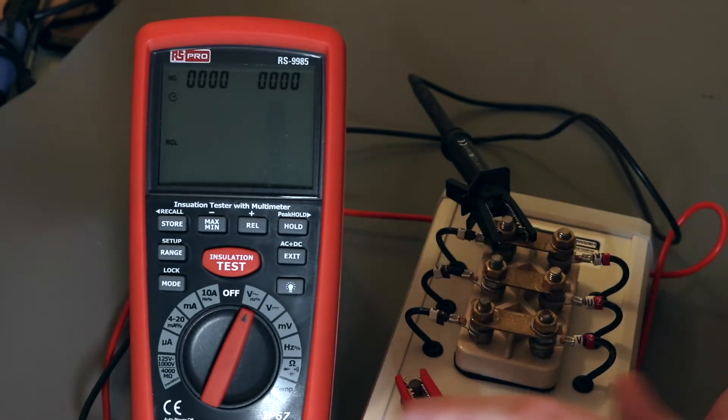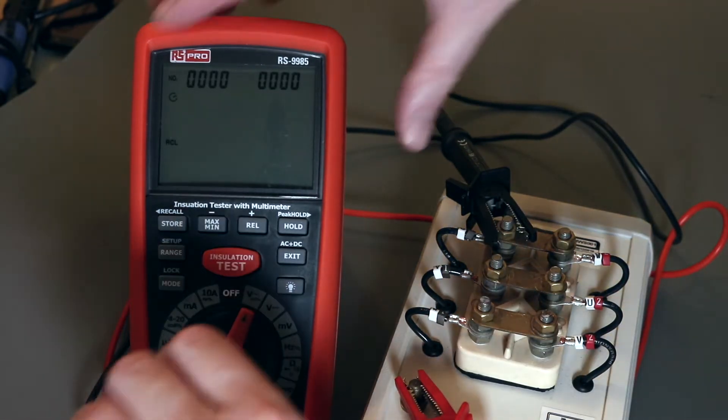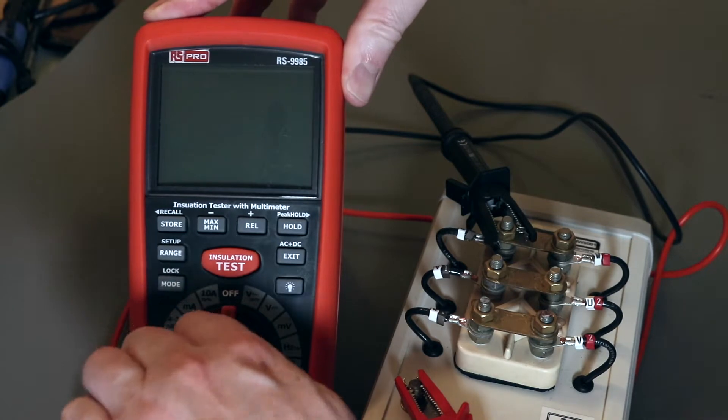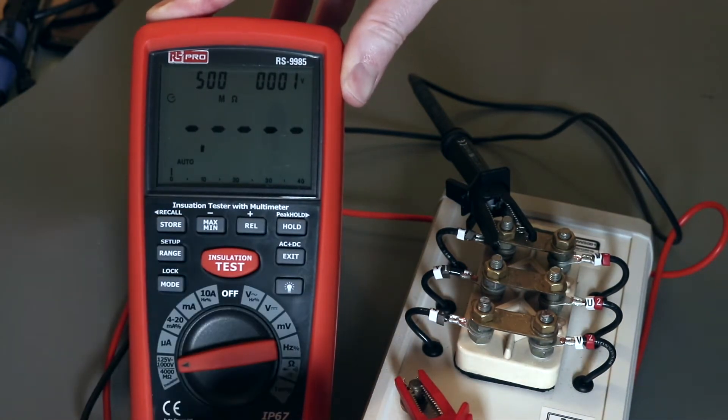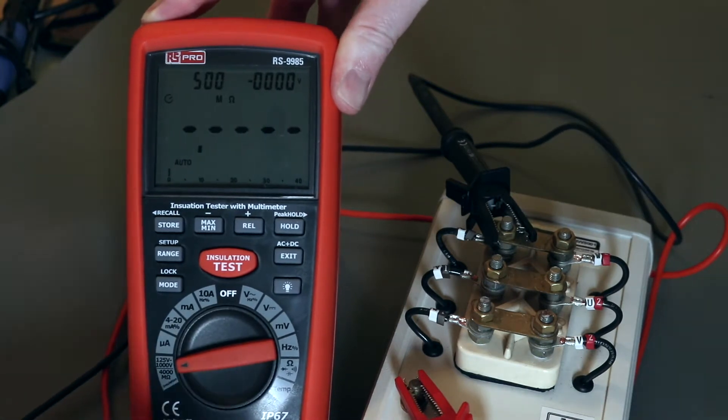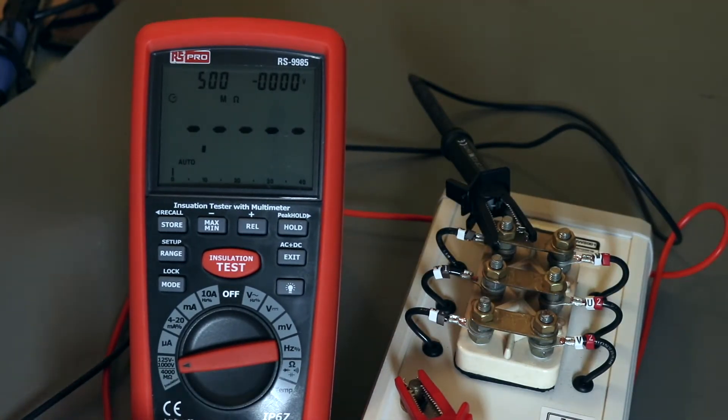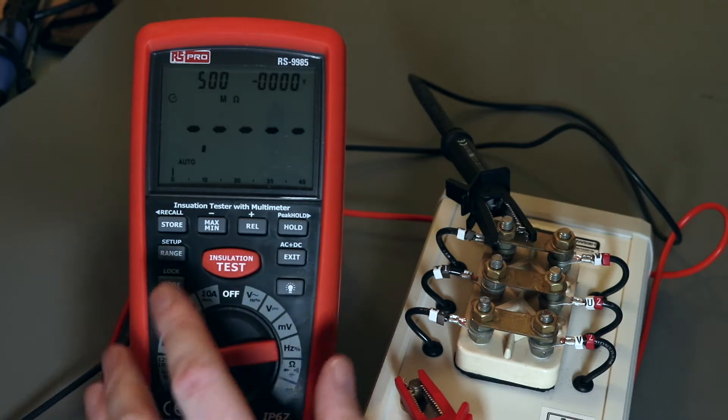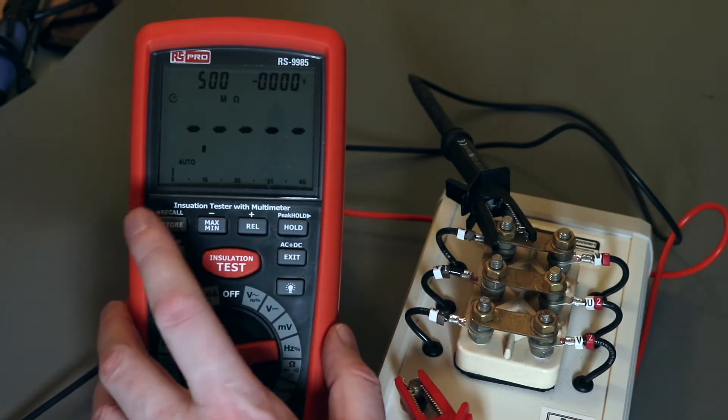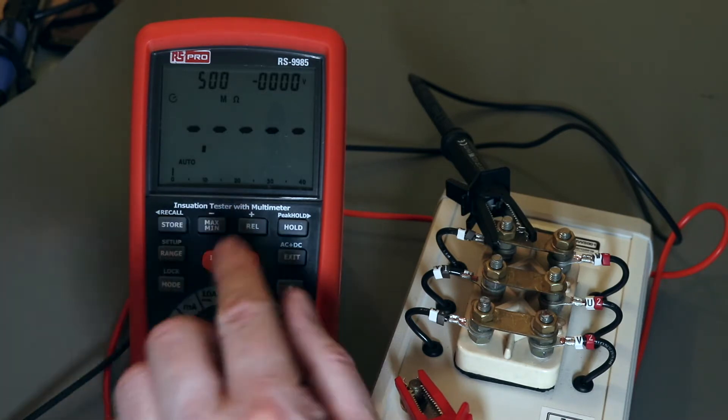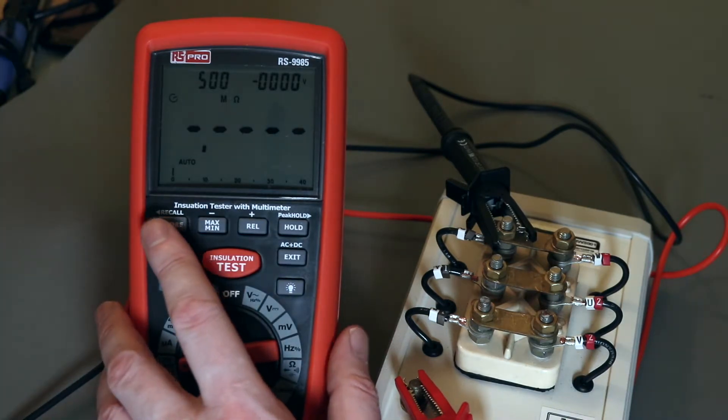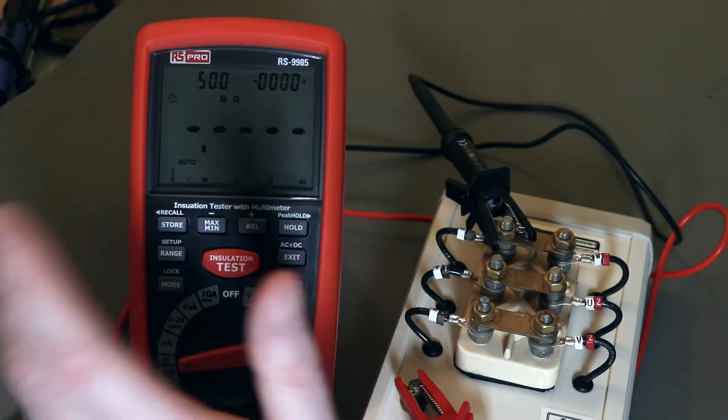What I will then do is an insulation resistance test. Now this instrument doesn't have an actual star or pi ratio function. But you can cheat using this store function to save all that data. And then go back to it. Extract the readings. And then calculate them manually yourself.